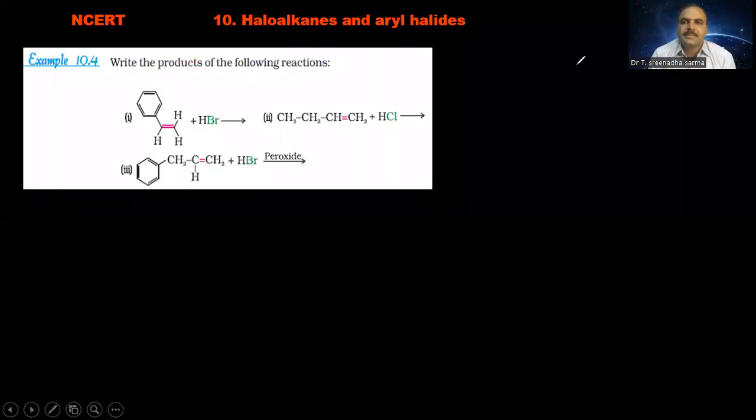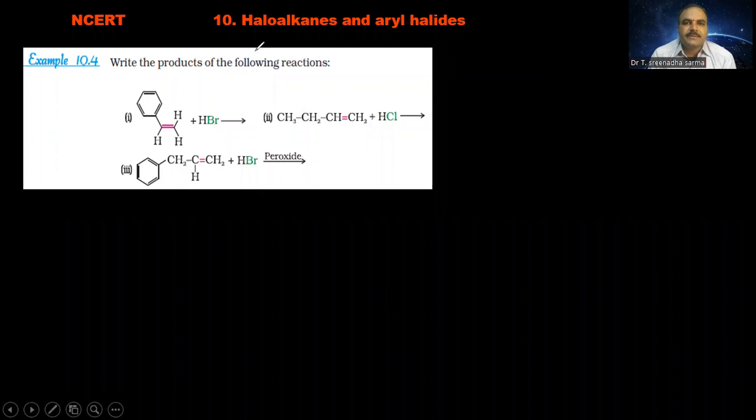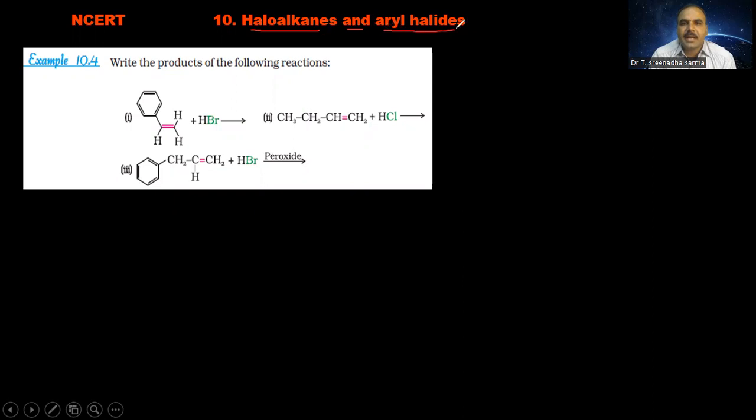Hello students, in this session we discuss haloalkanes and aryl halides chapter problem number 4. The question is write the product of the following reactions. So here three reactions are there, write the major product of the following.